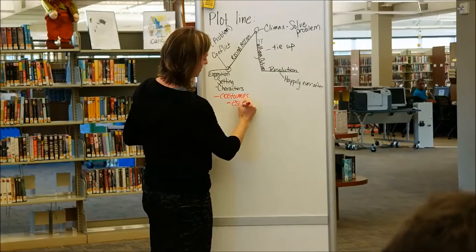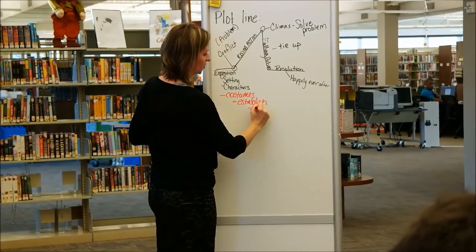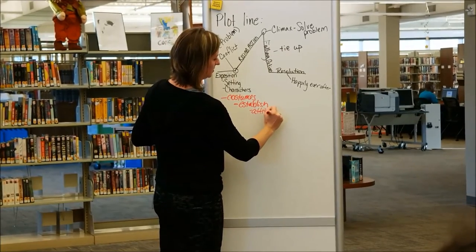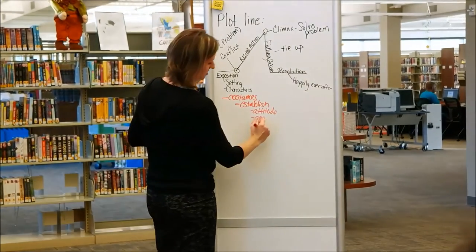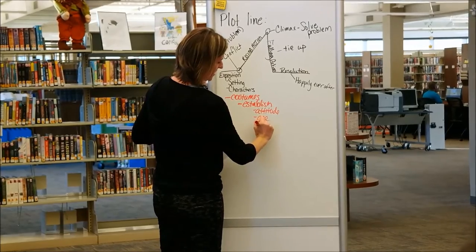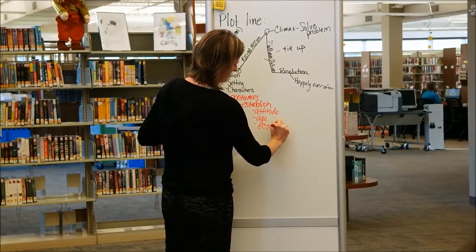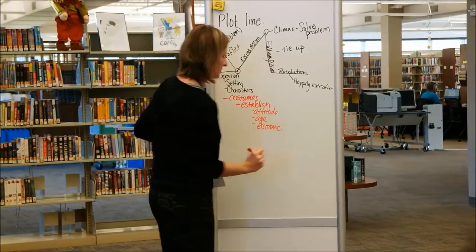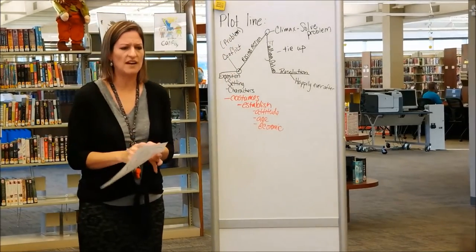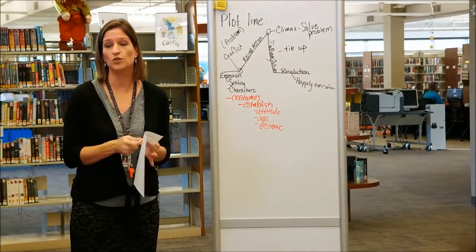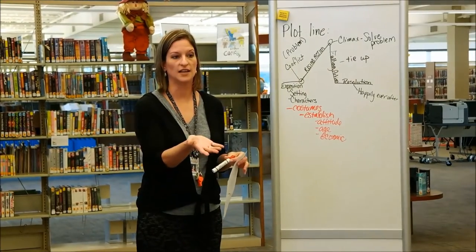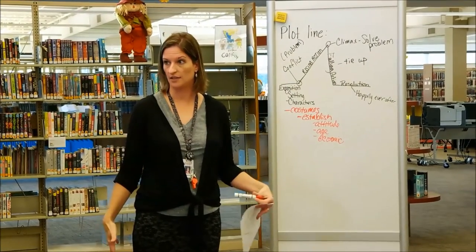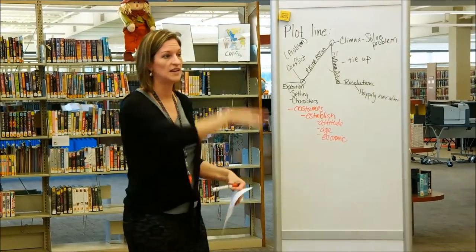Costumes can establish things like a character's attitude, maybe their age, maybe their economic status. They can establish time period. If you don't do that really fast, you'll spend a whole lot of your six minutes explaining 'these are my characters and this is my setting,' when really it should just be evident. Your outfit says who you are; your setting says who you are.